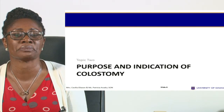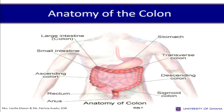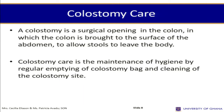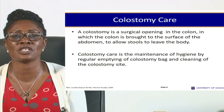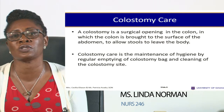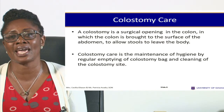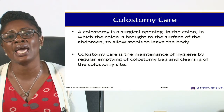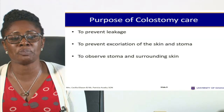Purpose and indication of colostomy. A brief anatomy of the colon: we have the ascending colon, transverse, descending colon, the sigmoid, rectum, and anus. Since it's a colostomy, it is basically in the colon. A colostomy is a surgical opening in the colon in which the colon is brought to the surface of the abdomen to allow stools to leave the body. Colostomy care, therefore, is the maintenance of hygiene by regular emptying of the colostomy bag and cleaning of the colostomy site.